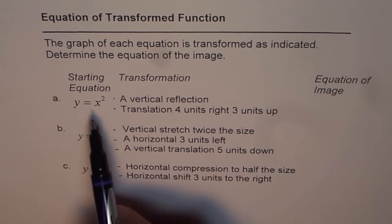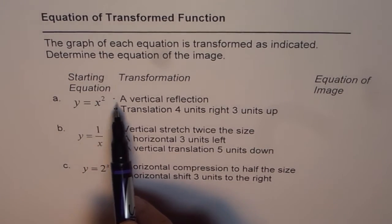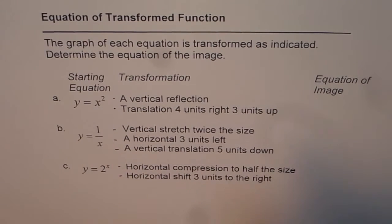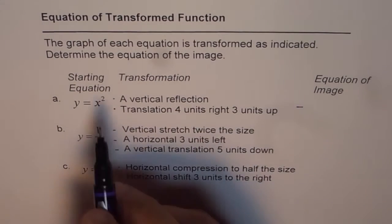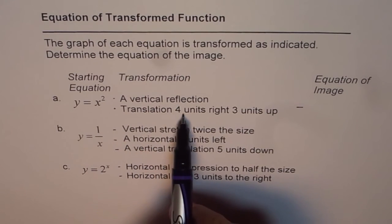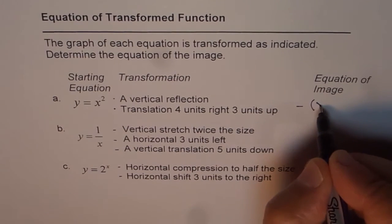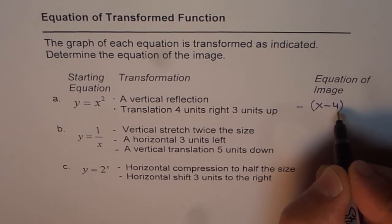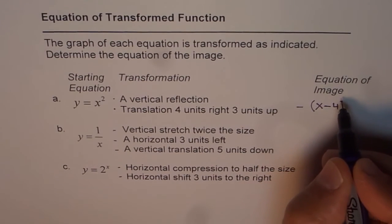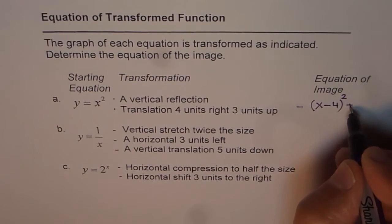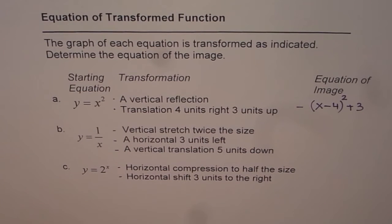Here is my answer. For y equals x squared: vertical reflection means we put a minus sign, giving minus x squared. Then, translation of 4 units right means within the brackets we write x minus 4, so that is the horizontal transformation. And 3 units up means plus 3. So the transformed equation becomes y equals negative (x minus 4) squared plus 3.